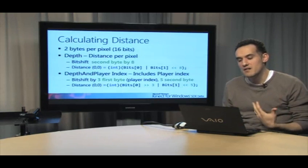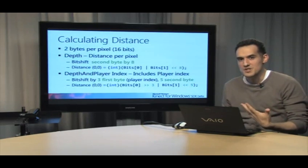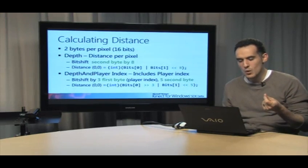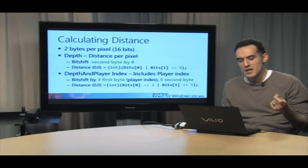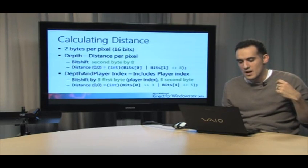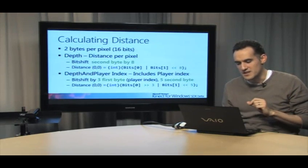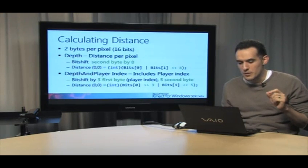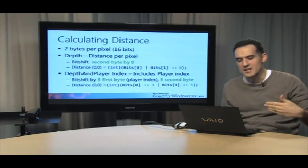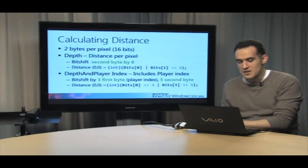Now when you're talking about depth and player index, what we're actually doing is actually adding the skeletal information in here. So it includes the player index, which is, hey, I know that this particular point represents a player index. So what we're doing is we have a different formula. We bit shift the first byte, bits 0 for 0,0, we bit shift by 3 the first byte, because that contains the data for what the player index is, and then shift the second byte by 3, and the specific formula is below. So just realize that to get the distance for 0,0, it depends on whether you're using depth or depth and player index, and the depth and player index actually includes the player index data. So that's the actual formula.